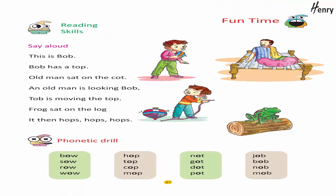Reading skills — say aloud: This is Bob. Bob has a top. An old man sat on the cot. An old man is looking at Bob. Bob is moving the top. A frog sat on the log. It then hops and hops.